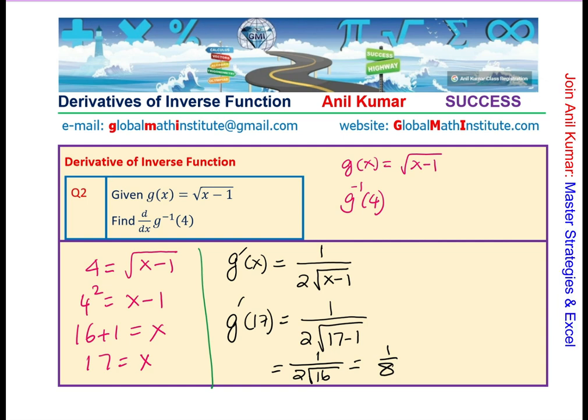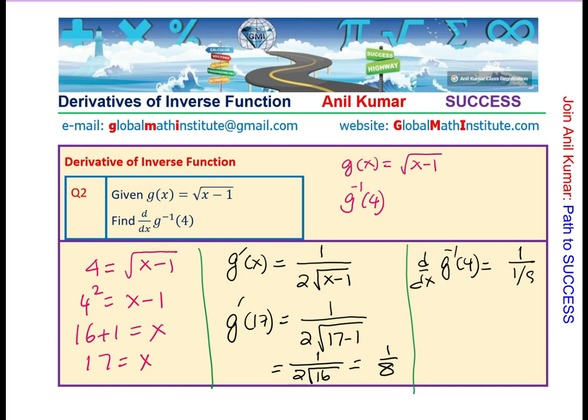You get the whole idea. Now, we can say that the derivative, the d dx of g inverse of 4 is equal to reciprocal of 8. 1 over 1 over 8 which is equal to 8.